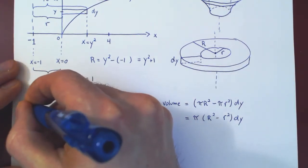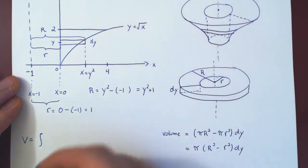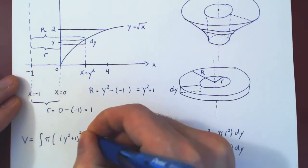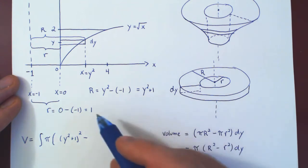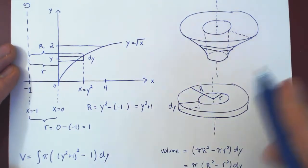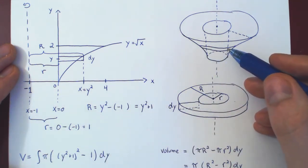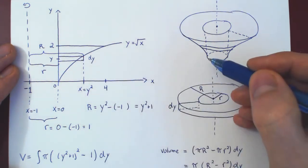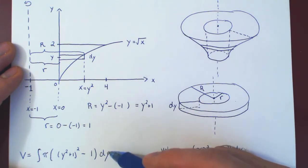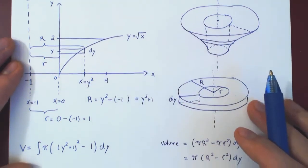The total volume is the integral of pi times (R squared minus r squared) dy. Substituting, uppercase R is y squared plus 1, so we square that; lowercase r is 1, so r squared is 1. The horizontal rectangles run along the y-axis from y equals 0 to y equals 2, so we integrate from 0 to 2.